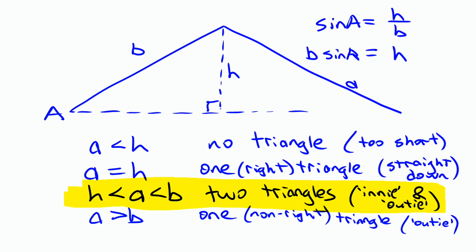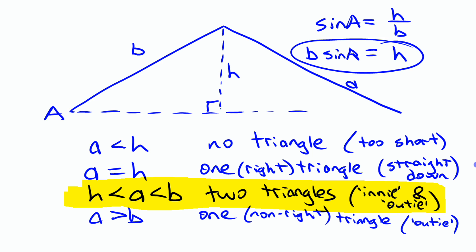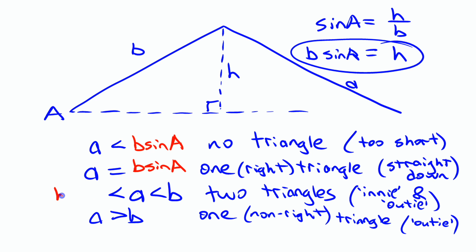Now if we want to express this without using H, we can replace every H with B·sine A. So instead of A < H we write A < B·sine A, and the condition for the ambiguous case becomes H < A < B, which is B·sine A < A < B. That condition is when there are two possible triangles and you have the ambiguous case.